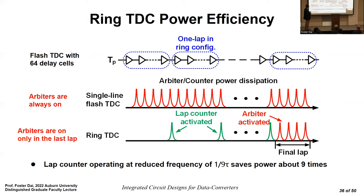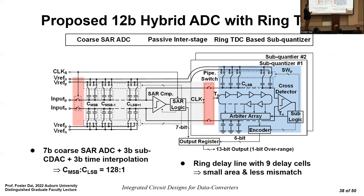This concludes the architecture story. The proposed 12-bit SAR ADC uses the main ADC plus ring TDC as a fine quantizer, and the ring TDC also controls the timing of the sub-CDAC switching, achieving automatic scale alignment.